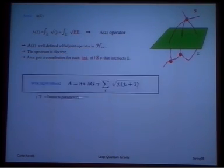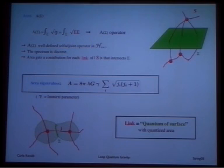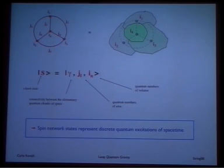The same game can be played with the area. Again, the spectrum can be computed. This is the spectrum. And the area now gets a contribution for each link that crosses the surface, so you can think of each link carrying a quantum of area.